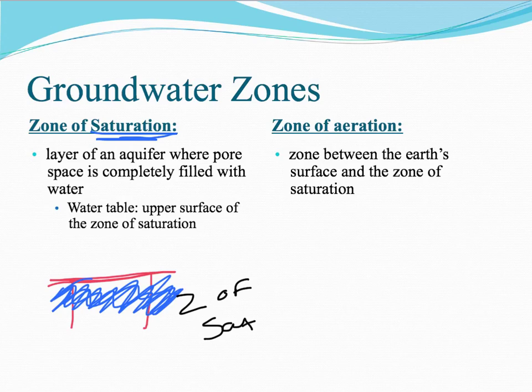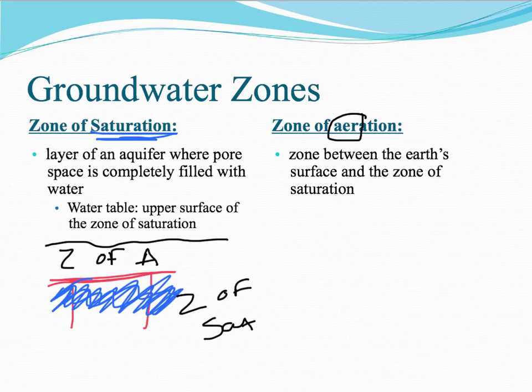The zone of aeration — you see here you have air, there's no water. This is the zone between the earth's surface and the zone of saturation. So the zone of aeration goes right there.